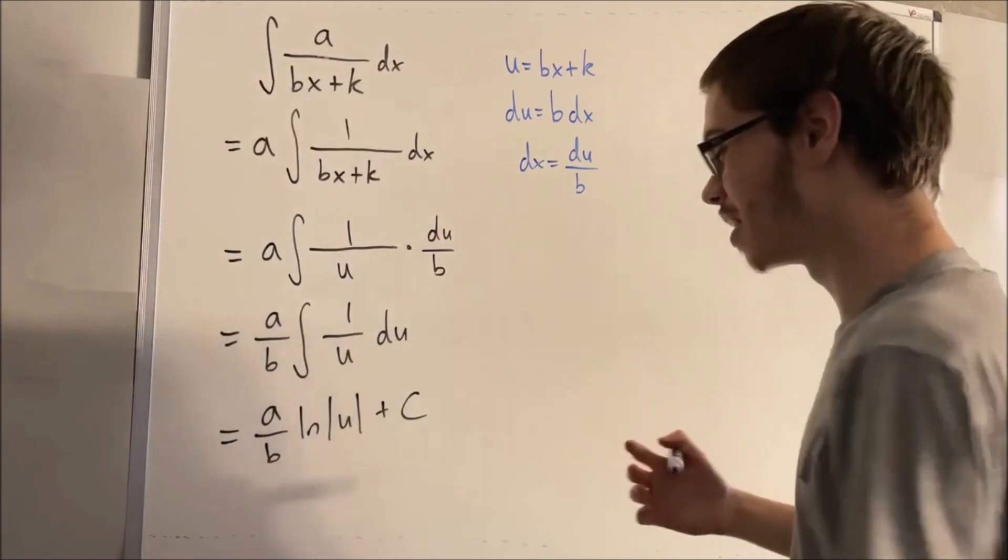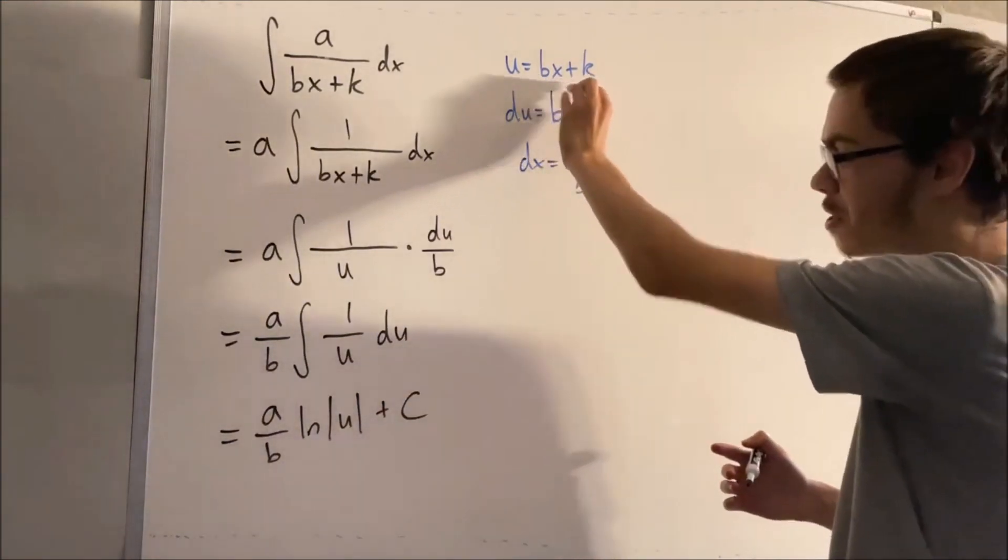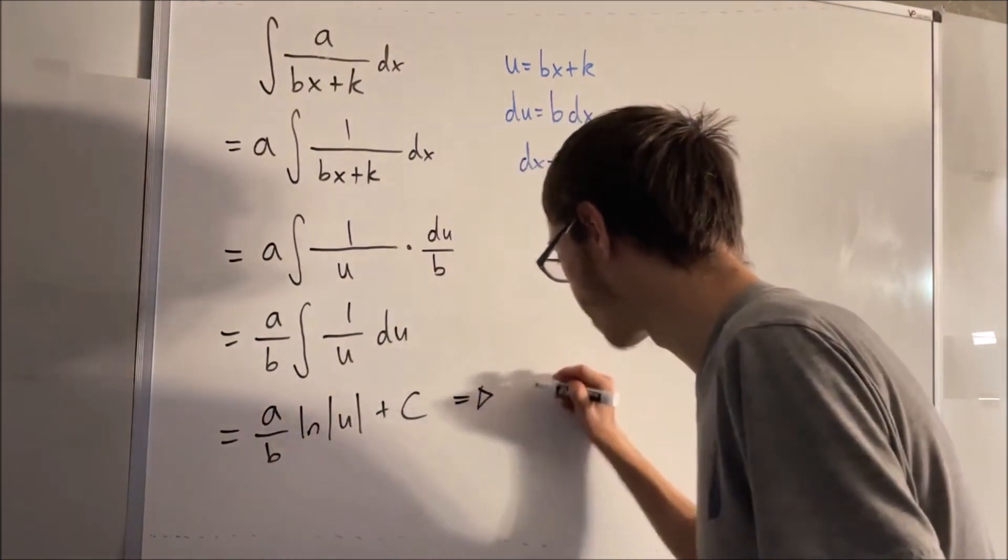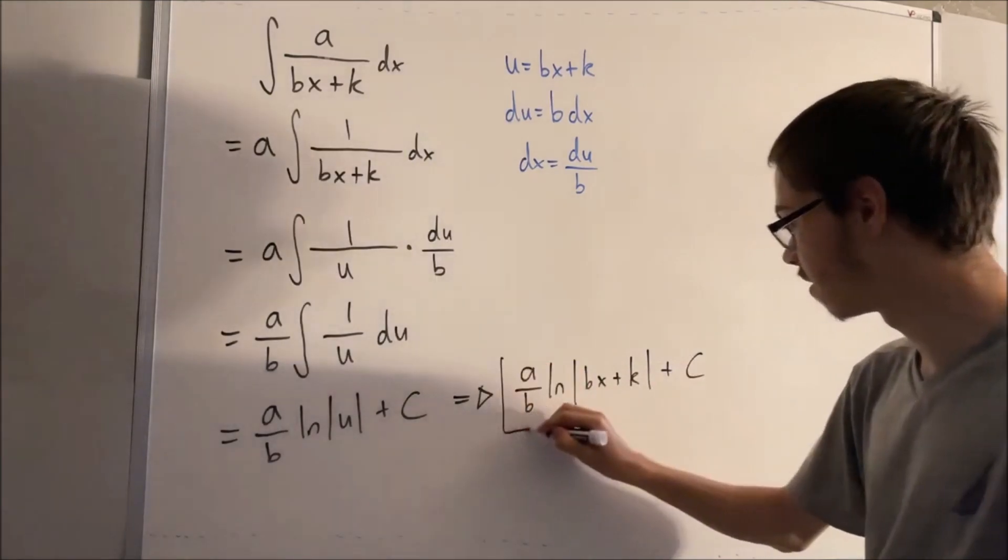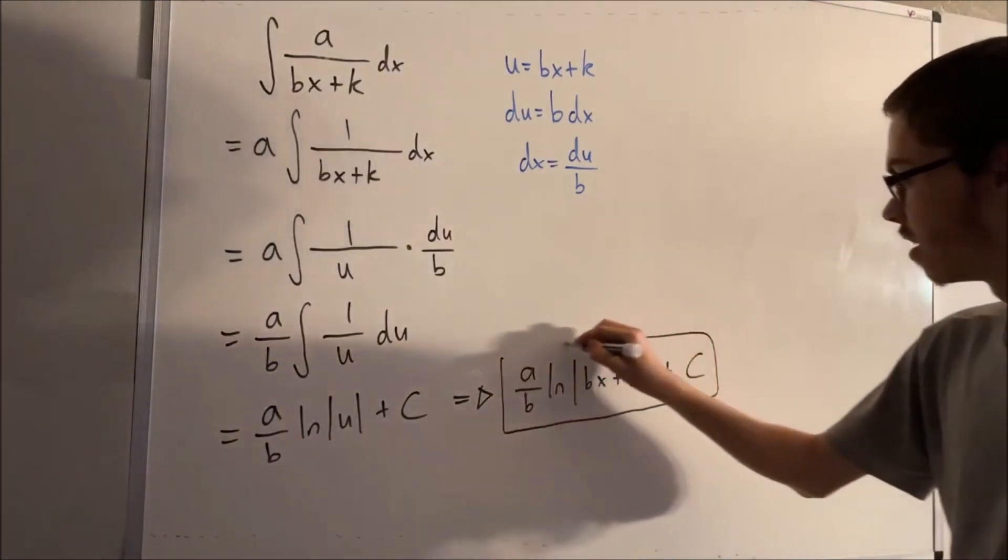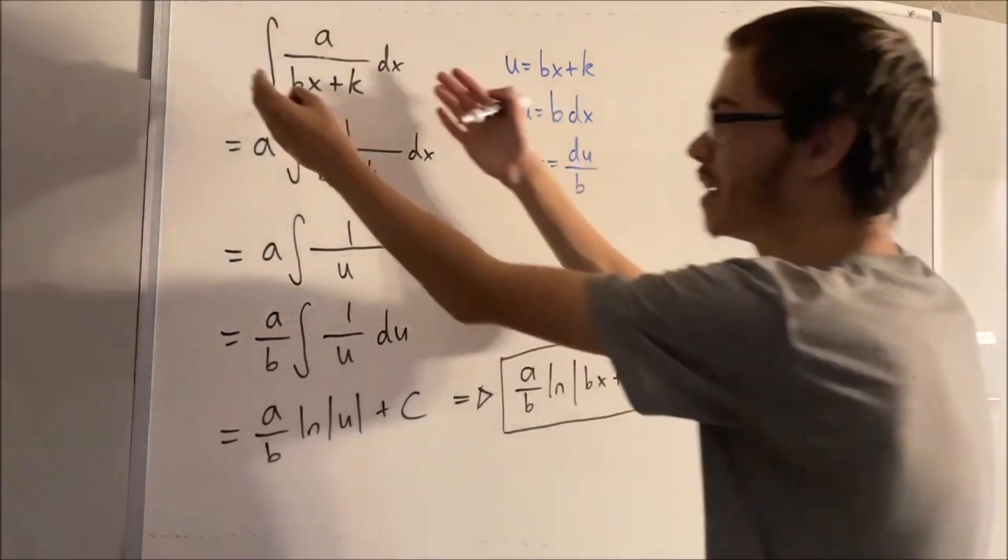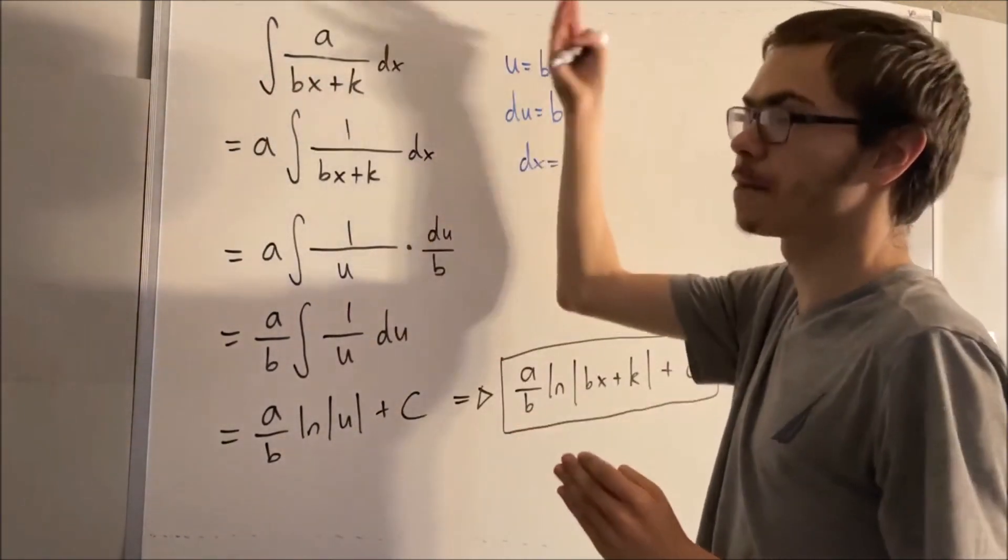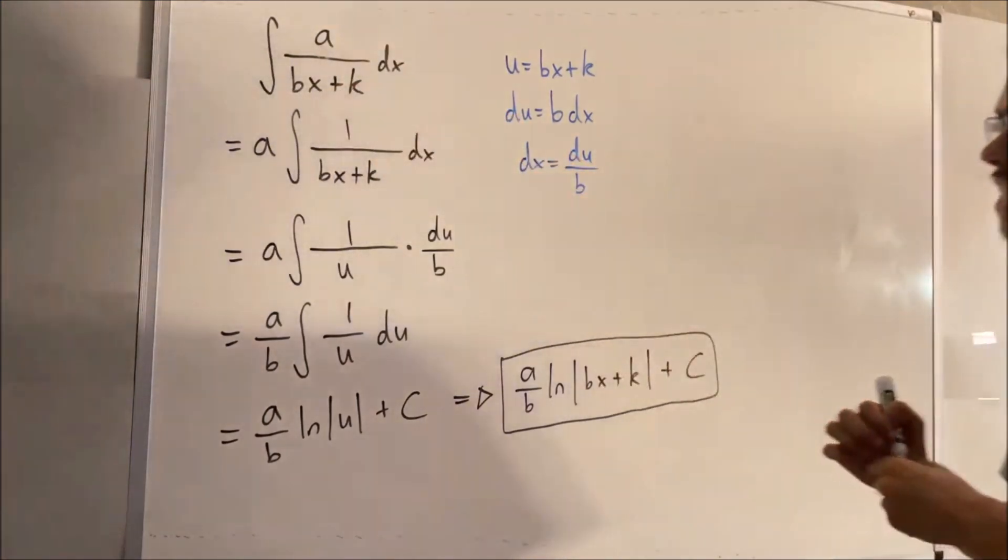All we have to do is substitute what we have for u back when we did the u substitution. That means that our final answer is this. This would be the integral of something in this form, where we have a constant in the numerator and a linear equation in the denominator.